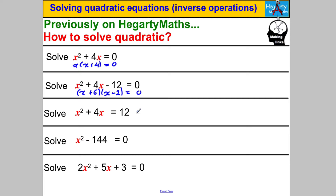The next quadratic wasn't equal to zero, so you subtract 12 from both sides to make the right-hand side zero, then solve. The one below that you should spot as a difference of two squares: X² − 12² = 0, which factorizes to (X − 12)(X + 12) = 0, giving X = 12 or X = −12.